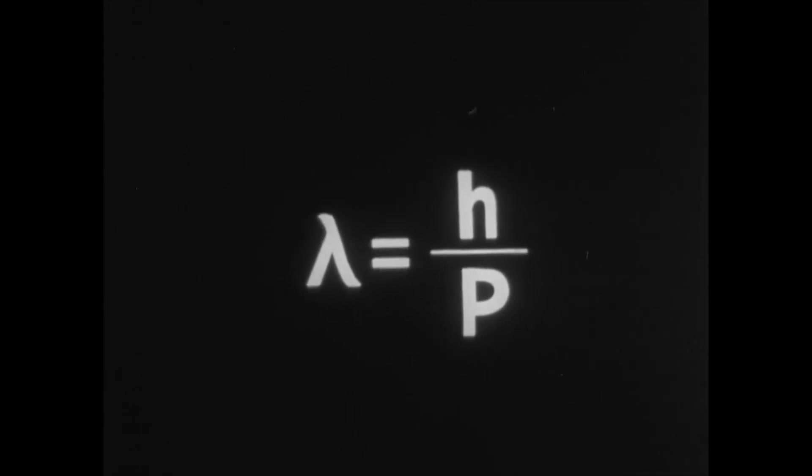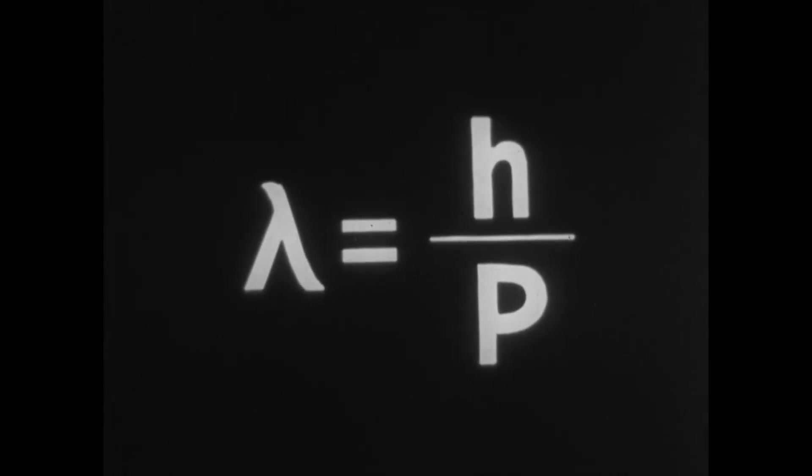Louis de Broglie hypothesized that any material particle with momentum P is analogous to a wave with a wavelength lambda and is determined by this formula on the screen.